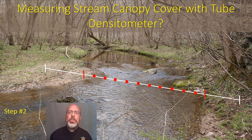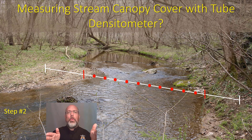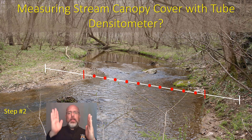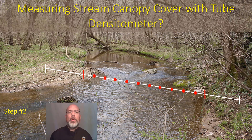Step number two: once you have a transect set up, you want to measure that wetted width from bank to bank and then divide that transect into 10 equal portions. You can see in this diagram the red lines indicate the wetted width, and the red dots indicate those 10 equally spaced points along the transect.